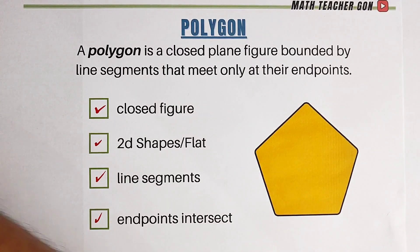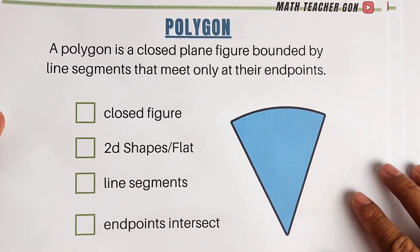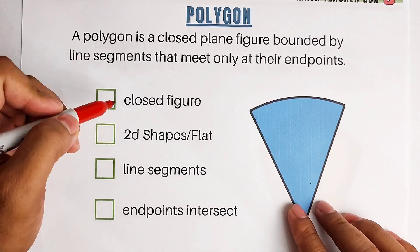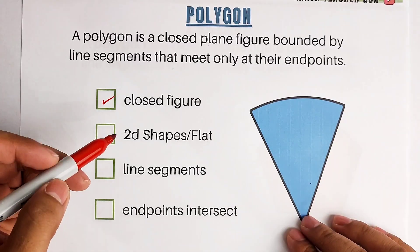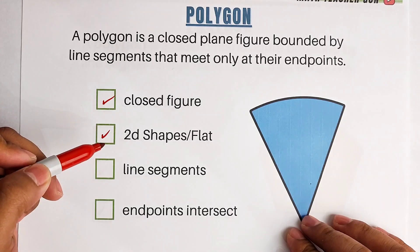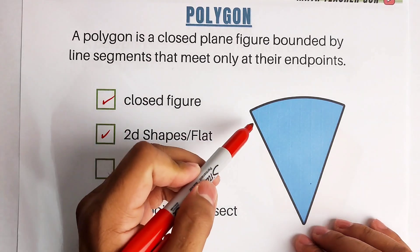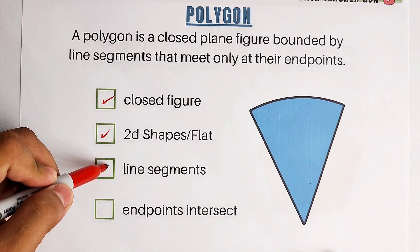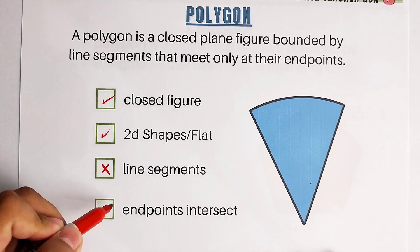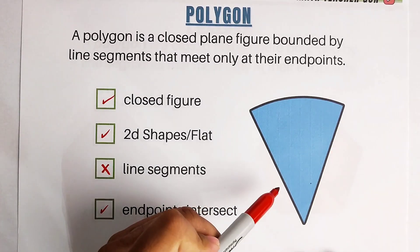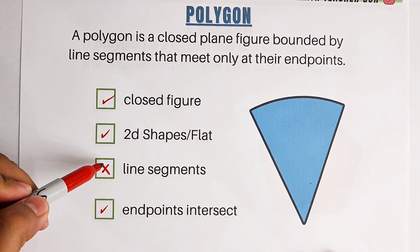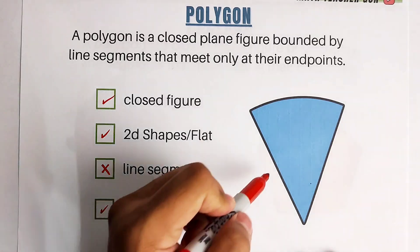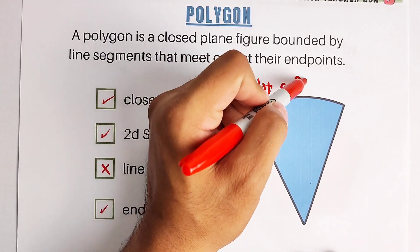For this example, I will give you this figure. We have the same checklist to see whether this one is a polygon or not. Is this a closed plane figure? Yes. Is this figure a flat shape? Yes. Do we have line segments? Yes, this one and this one. But what about this one? This one is not a line segment because this one is a curve. Automatically, this one will get an X. Are the endpoints intersecting? Yes. So what is our final verdict? This one is not a polygon because the lines here are not all line segments. So this one is not a polygon.